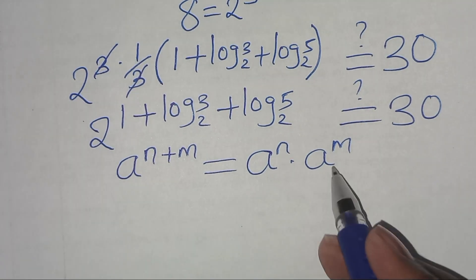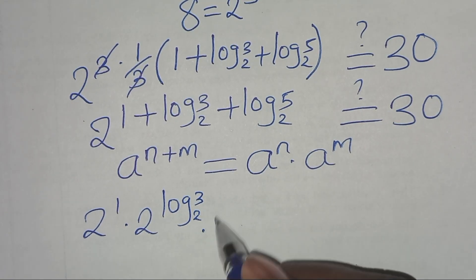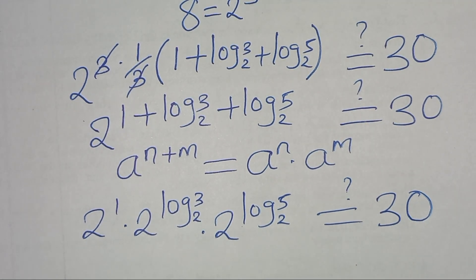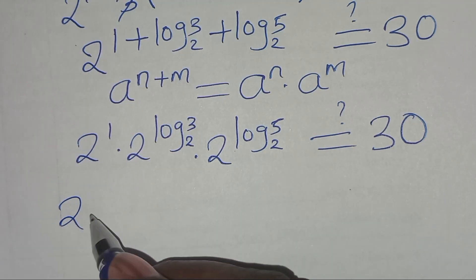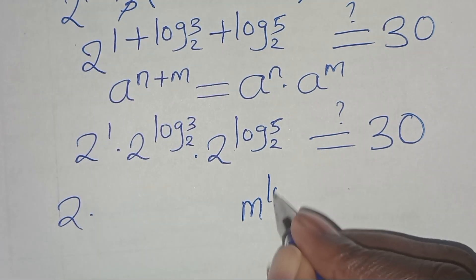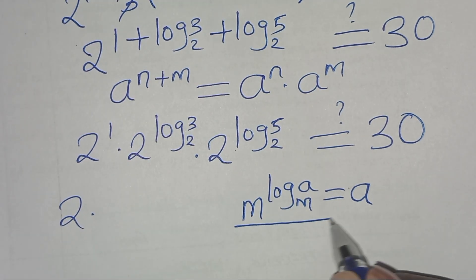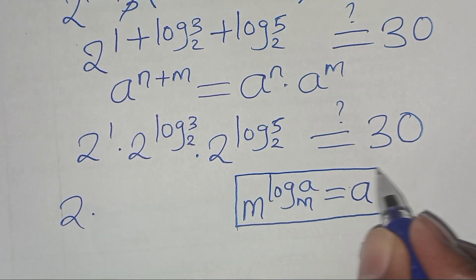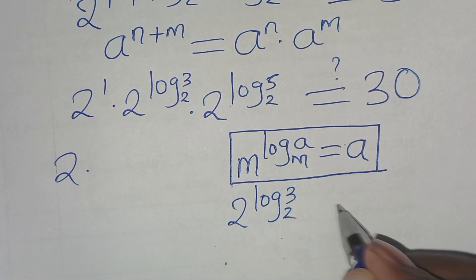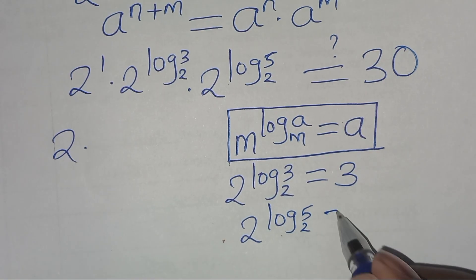This is in the form of m to the power (log a to base m), which essentially gives us a. Applying this logarithm property, 2 to the power (log 3 to base 2) equals 3, and 2 to the power (log 5 to base 2) equals 5. So substituting, we have 2 times 3 times 5.